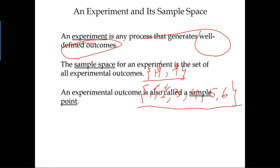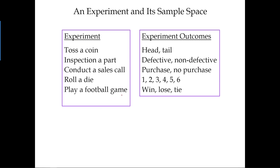A sample point is each individual experimental outcome. So heads is one sample point, tails is another sample point, and 1, 2, 3... are each sample points for the die. More examples of experiments and their sample spaces: inspect a part — defective or non-defective; conduct a sales call — purchase or no purchase; play a football game — win, lose, or tie.